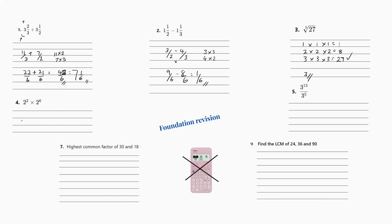Number four is an indices question. Remember what we do when we're multiplying with powers: when we times, we add the powers. So this is two to the power of two plus six — the answer is two to the power of eight. The next one has three to the power of 13 divided by three to the power of five. When the question is divide, we subtract the powers: 13 minus five gives three to the power of eight.